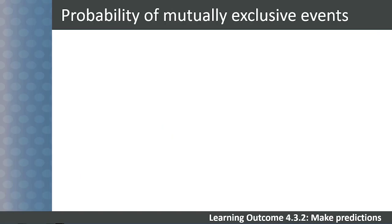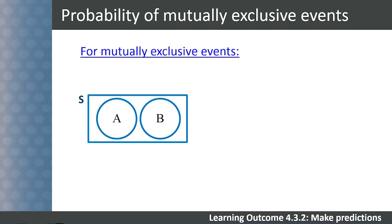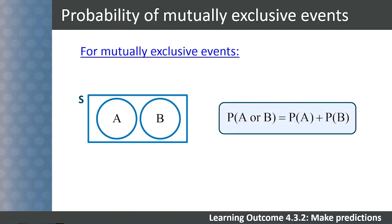Let's look at the probability of mutually exclusive events occurring. Remember that mutually exclusive events cannot both have a successful outcome at the same time. To determine the probability of two mutually exclusive events occurring, we use the formula: probability of A or B equals probability of A plus probability of B, which can also be written as the probability of the union of A and B equals probability of A plus probability of B.